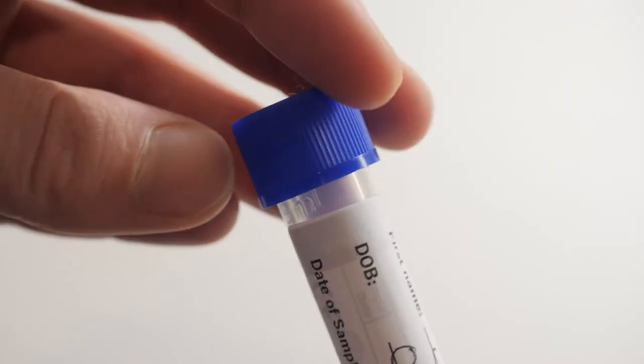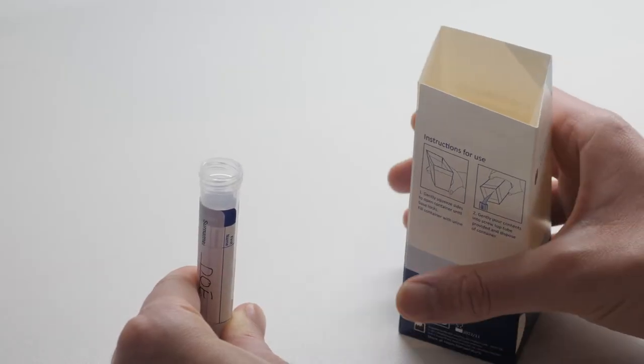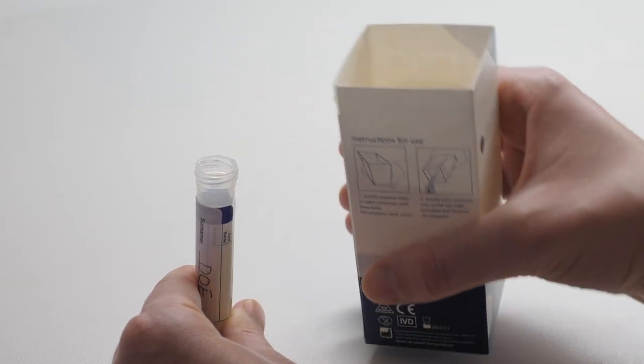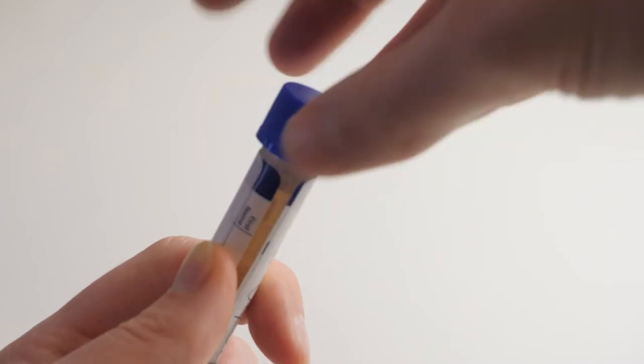Unscrew the lid of the sample tube and carefully fill the urine sample tube from the urine collection box, taking care not to get liquid on the outer of the sample bottle. Screw the lid of the sample tube tightly.